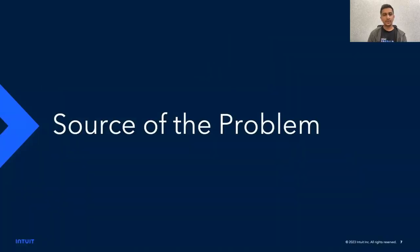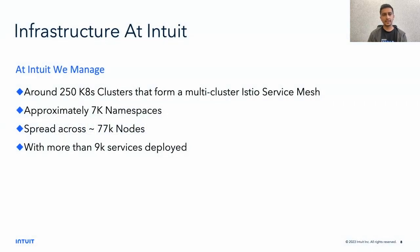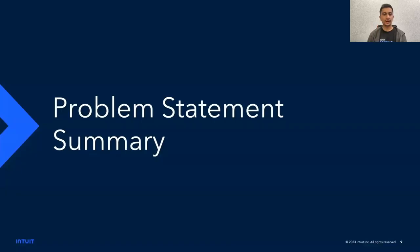Jumping on to today's talk, let's see the problem. Coming to the infrastructure at which Intuit runs, Intuit manages around 250 Kubernetes clusters which form the multi-cluster H2O service mesh. We run around 7,000 namespaces which includes around 77K nodes, running around 9,000 services deployed across multiple regions in the K8s clusters. That is the scale at which the services run.